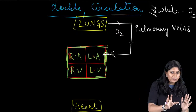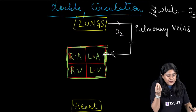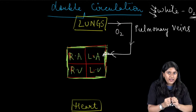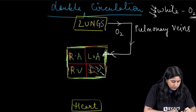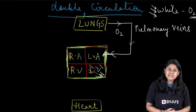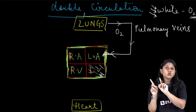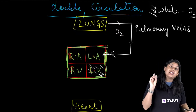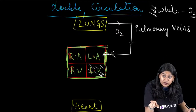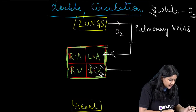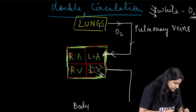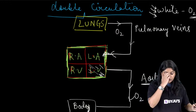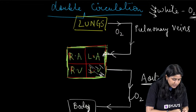Left atrium contracts and gives the blood to the left ventricle. Now the left ventricle has a very huge responsibility — to make sure that blood is being carried to the different parts of the body. From the left ventricle, the aorta carries the oxygen-rich blood to the different parts of the body.